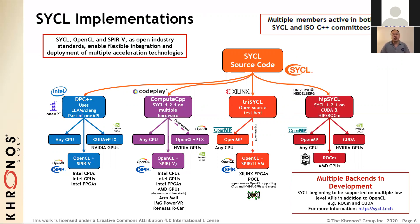ComputeCPP is Codeplay's commercial implementation, also based on Clang, although there is also a free download, which supports any CPU as well as a host of GPUs, FPGAs, and specialized accelerators through OpenCL with SPIR or SPIR-V, as well as NVIDIA GPUs through PTX ingested through OpenCL. It's the first conforming implementation of SYCL 1.2.1. Xilinx's open source SYCL implementation is called triSYCL, using an OpenMP backend for any CPU, and OpenCL with SPIR LLVM for Xilinx's FPGAs.